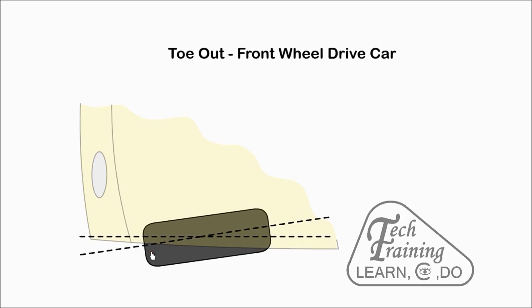With a front wheel drive car, the wheels are set to toe out. When the engine drives the front wheels, it will tend to pull in and straighten the wheels.